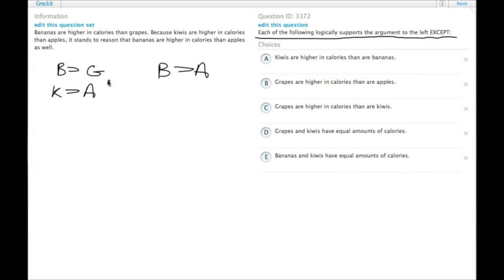Now, logically we don't have anything connecting these. We have the K is greater than A, and we have B is greater than G. We have no frame of reference to say that B is greater than A.